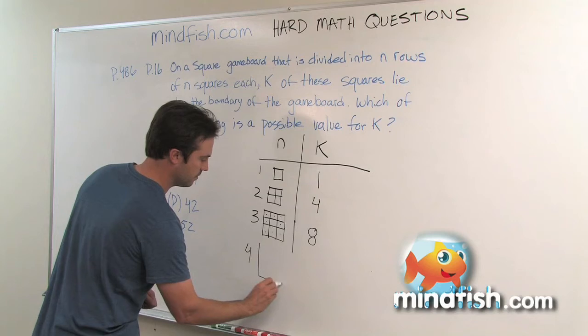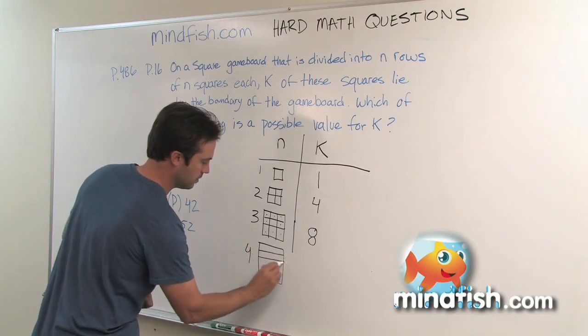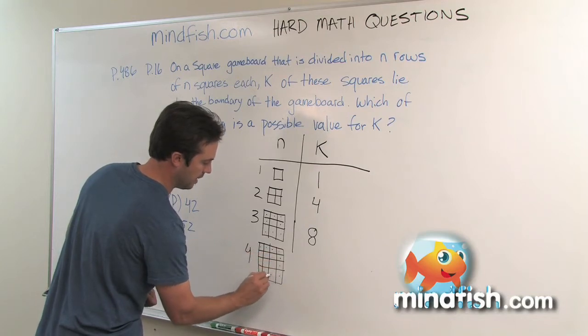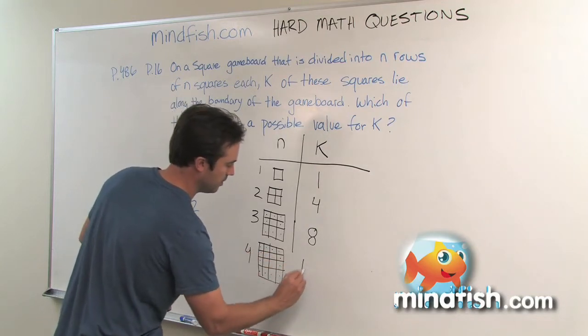Number 4, counting 1, 2, 3, 4, 5, 6, 7, 8, 9, 10, 11, 12, k is going to be 12.